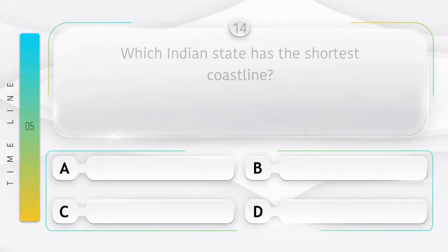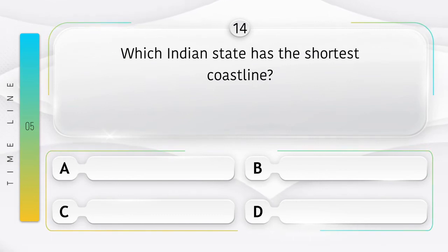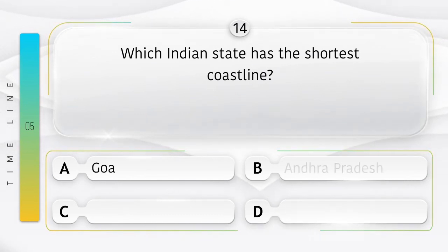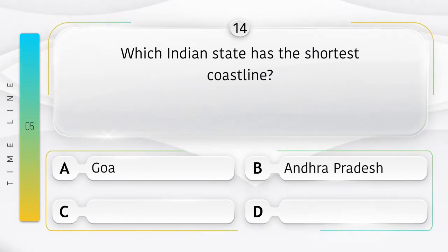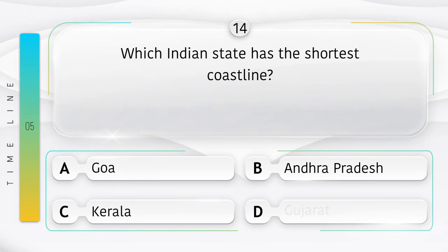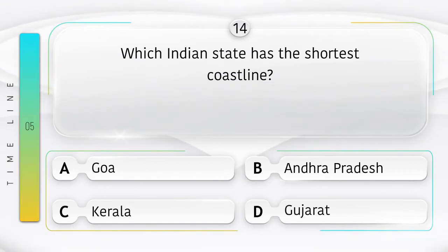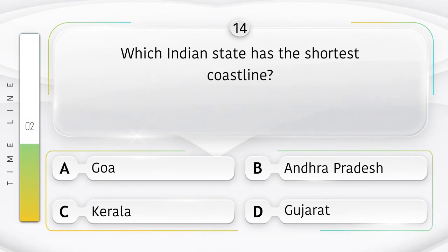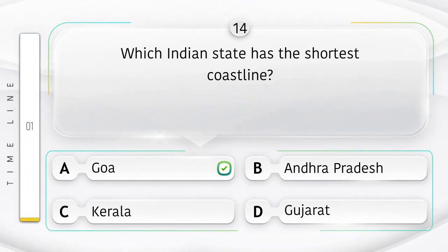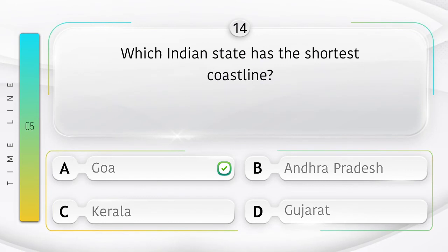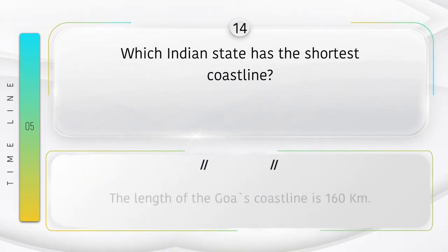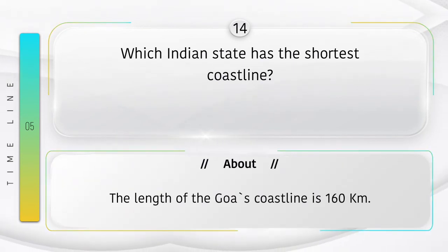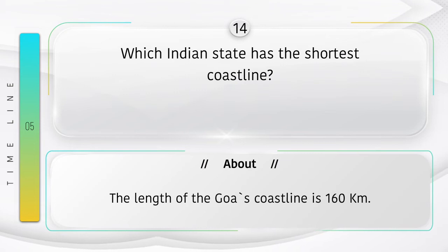Which Indian state has the shortest coastline? Option A: Goa, B: Andhra Pradesh, C: Kerala, D: Gujarat. Answer is option A: Goa. Did you know the length of Goa's coastline is 160 kilometers?